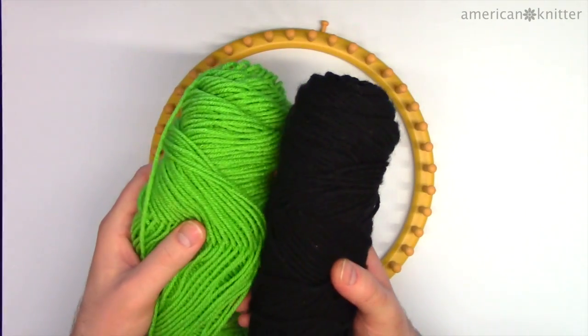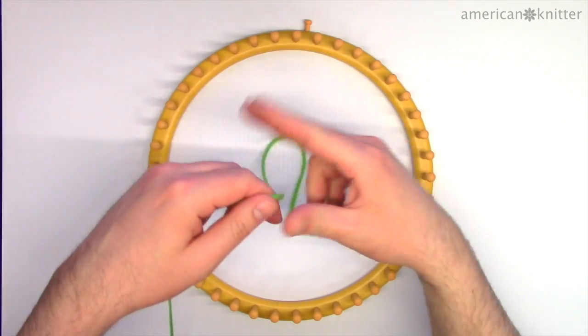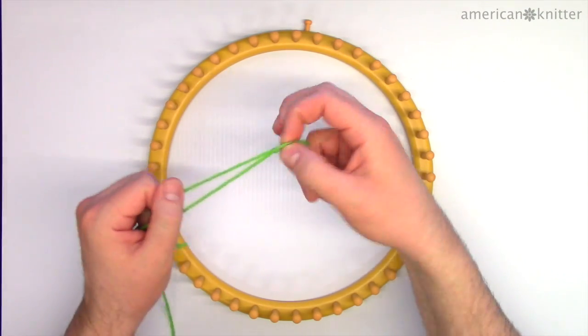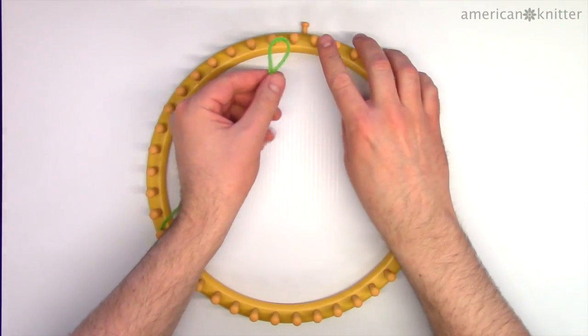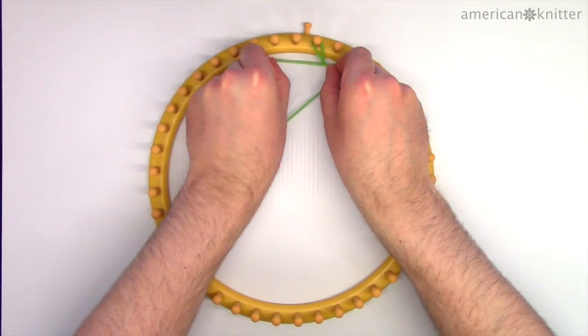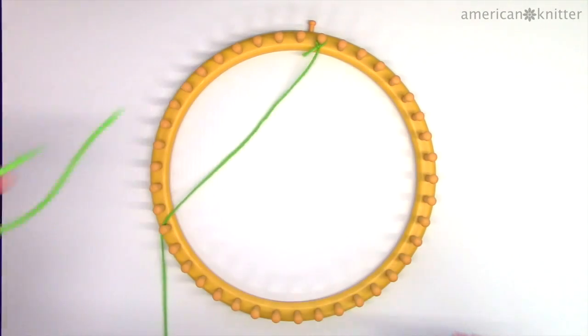We're going to use black and bright green yarn. Now let's get started. Tie a slipknot by wrapping the yarn around two fingers then pulling a strand through the loop. Secure the slipknot by cinching it closed onto the first peg. Then cut off the excess, but don't trim too close or it can come undone.